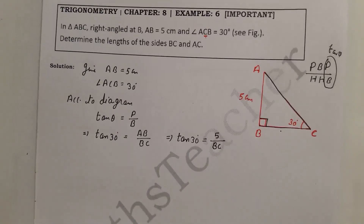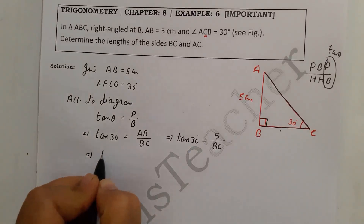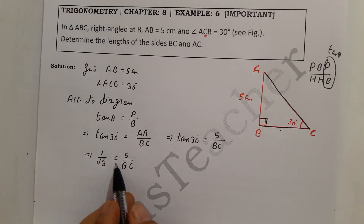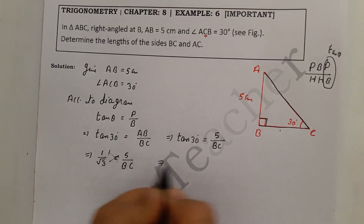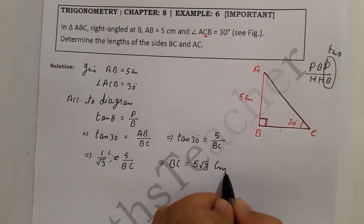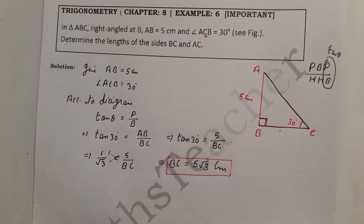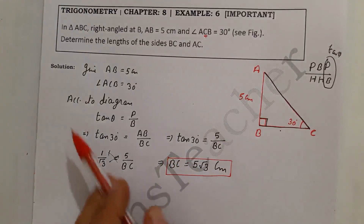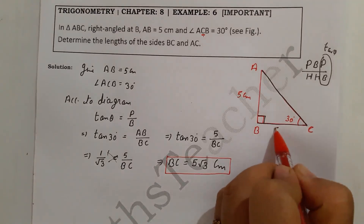From the table, tan 30° equals 1/√3. So we have 1/√3 = 5/BC. Cross-multiplying, BC × 1 = 5 × √3, therefore BC equals 5√3 cm. This is our value for BC.